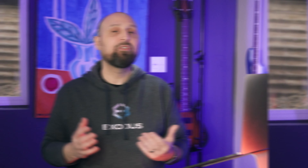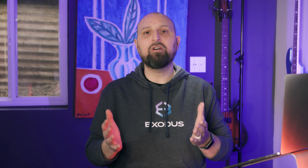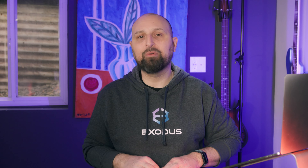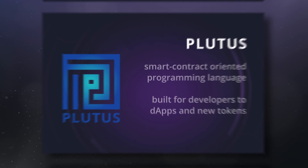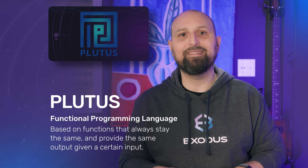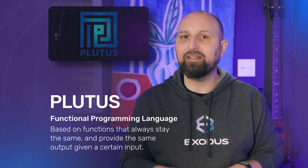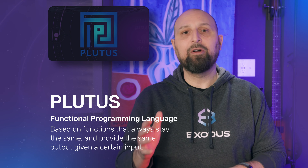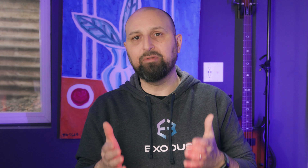By splitting up its network into two parts, Cardano allows people to continue transferring tokens and settling payments even as the computation layer is being upgraded. We've already seen several of these upgrades, like the Alonzo hard fork that brought smart contract functionality to Cardano back in September of 2021.